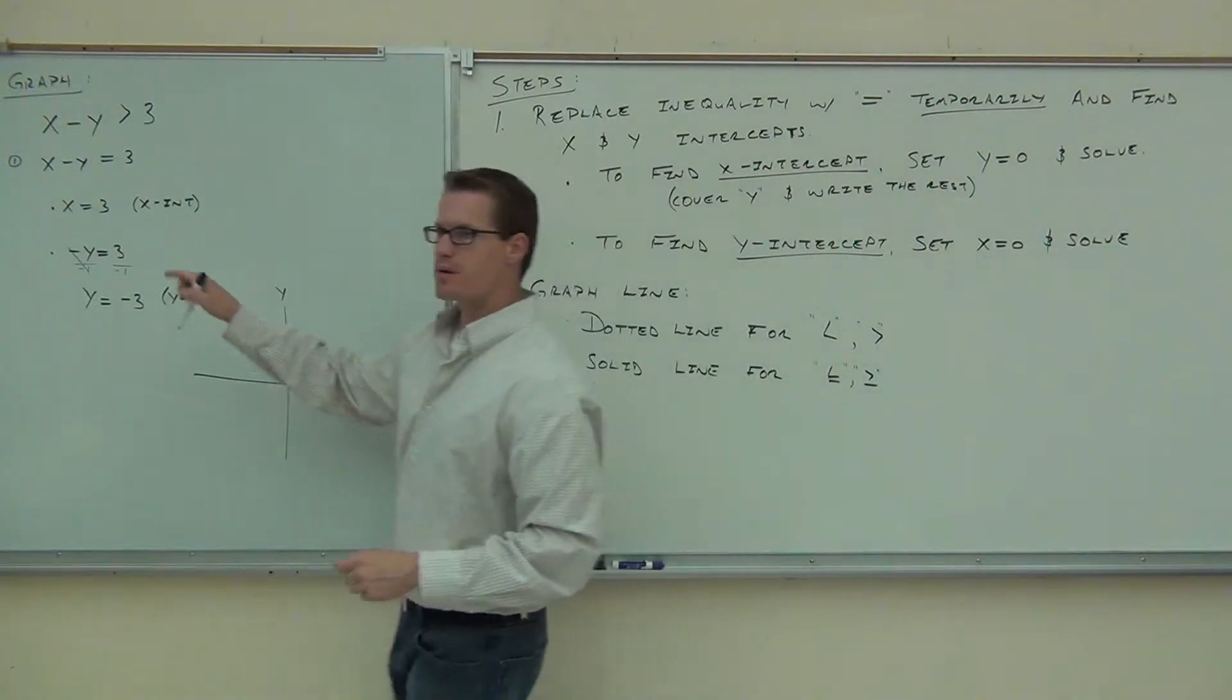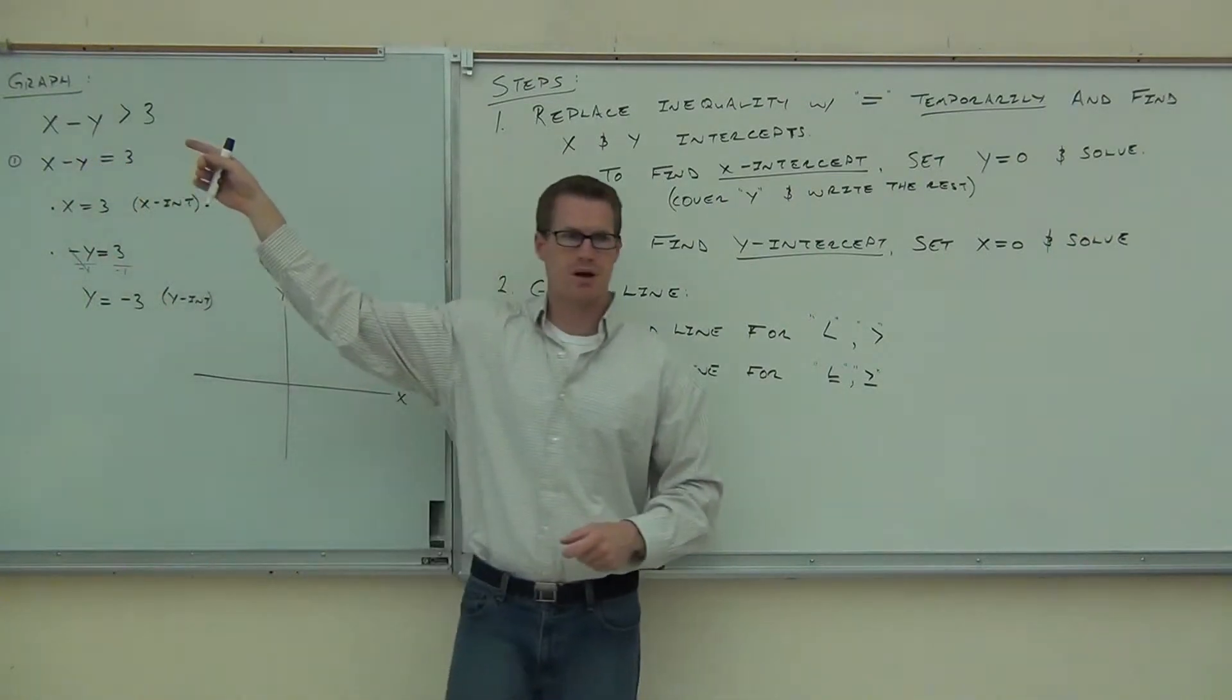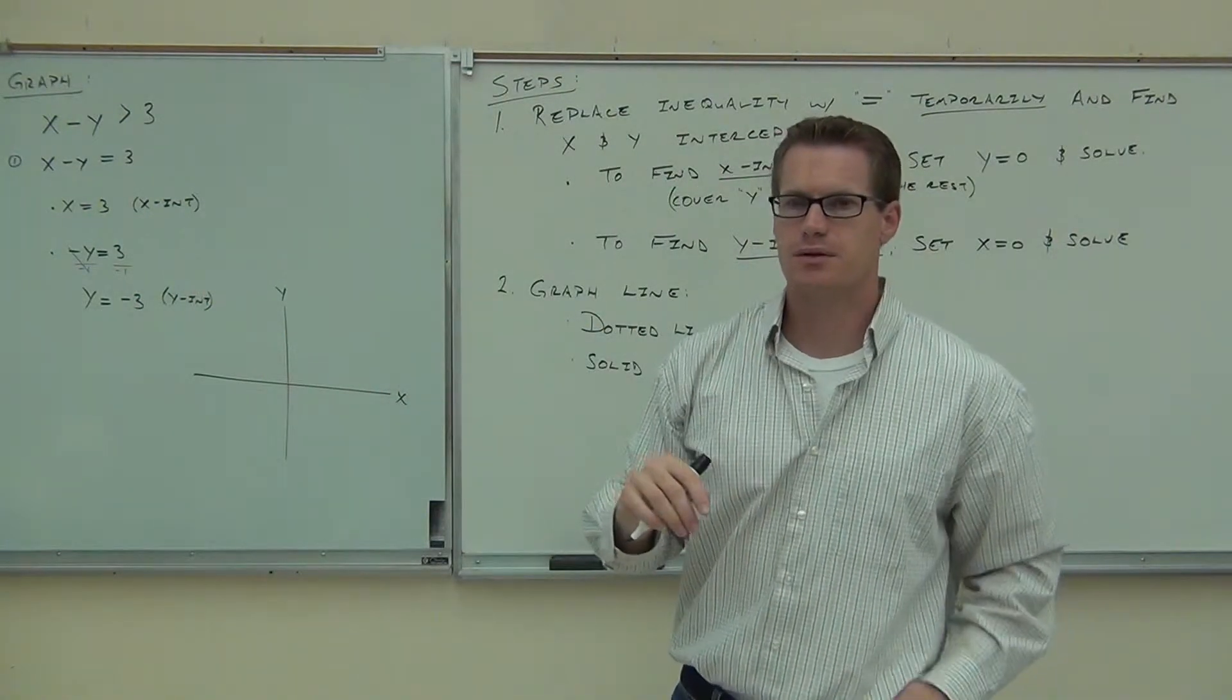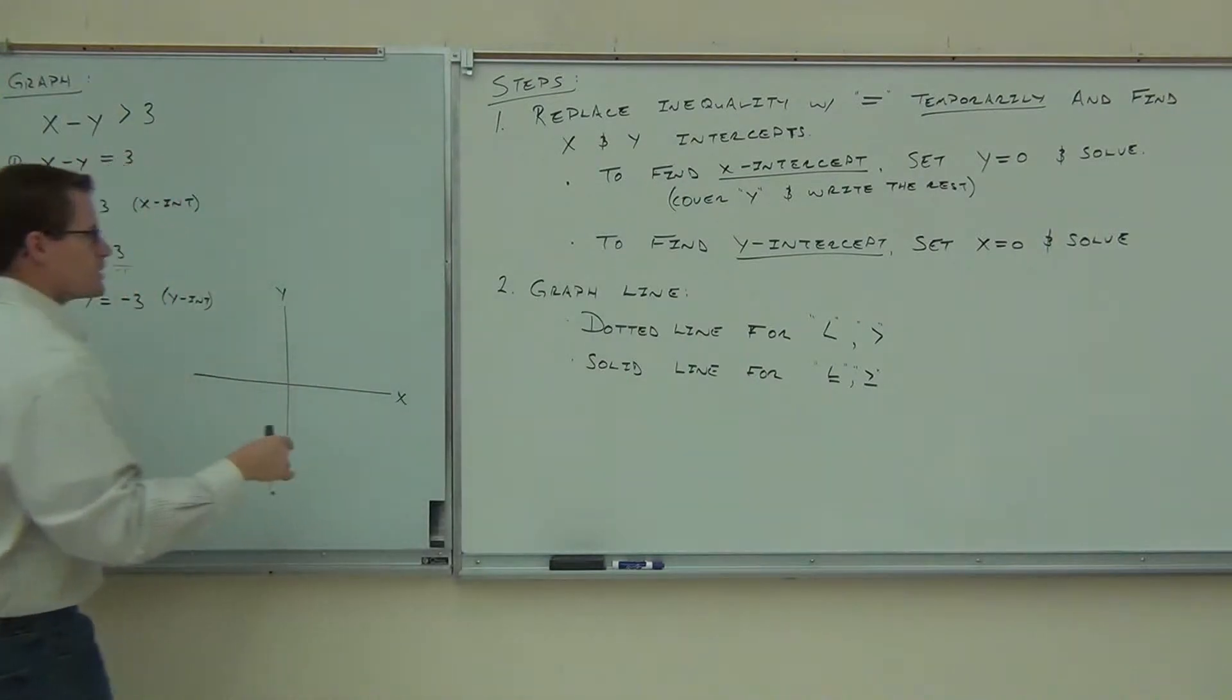We just temporarily did this step to get our intercepts. Right now we're going to go back up to here and look to see whether we graph this with a solid or a dotted line. Are we going to be using a solid or a dotted line here? Dotted, or a dashed line. That's really what we mean.